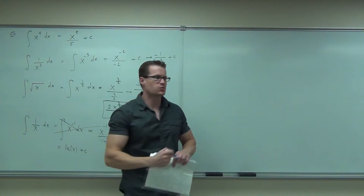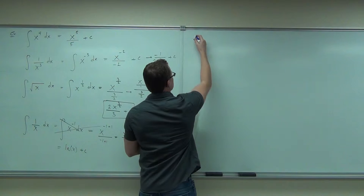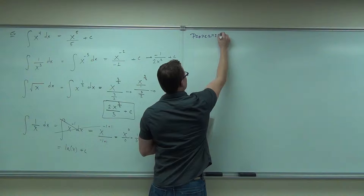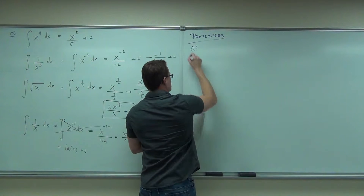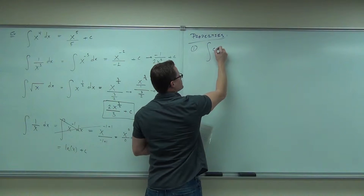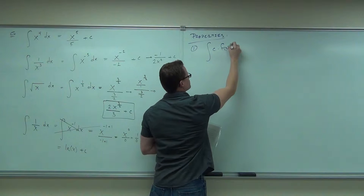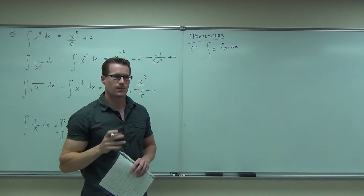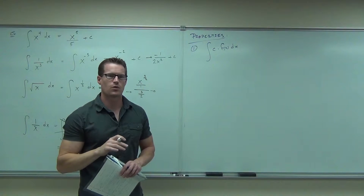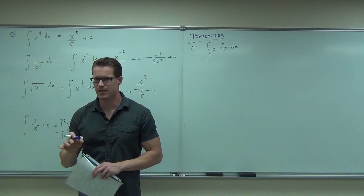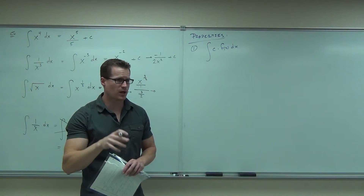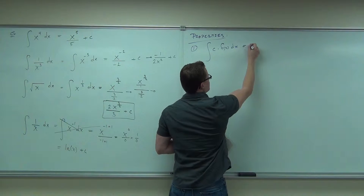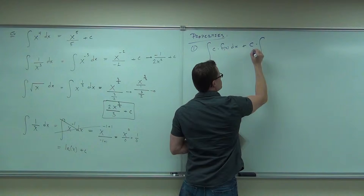You'll see them because they're exactly the same as derivatives. The first property is: if you take the integral of a constant times some function that has an x in it, what do you think you can do with that constant? You can take a constant outside of the integral. With integrals you really do this a lot — you can take a constant outside of your integral just like you could with a derivative.